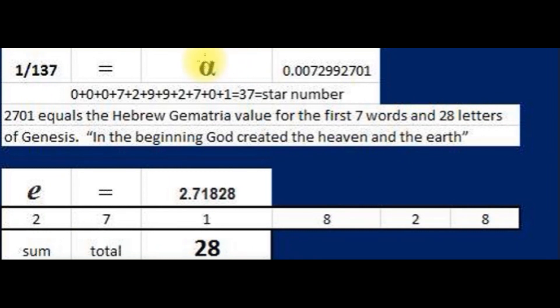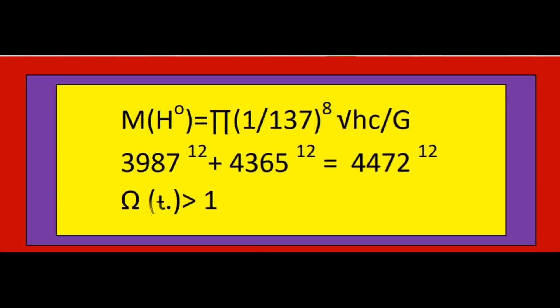In microphysics, alpha, the fine structure constant, is the reciprocal of the number 137. This is the Higgs boson formula, the God particle. The hypothesis of this formula has been proven.